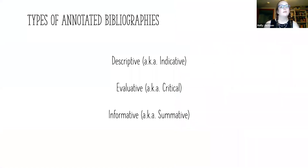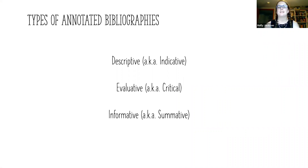There are three different types of annotated bibliographies. You've got descriptive, which is also known as indicative; evaluative, which is also known as critical; and informative, which is also known as summative.